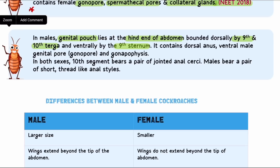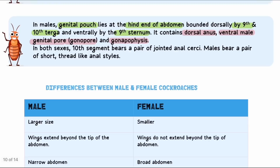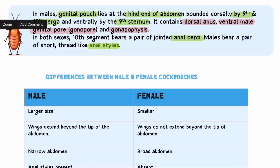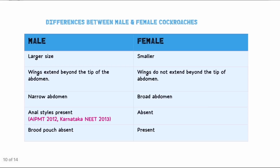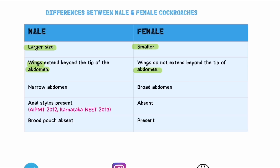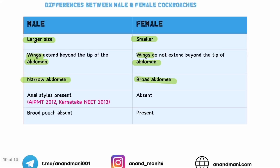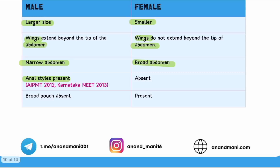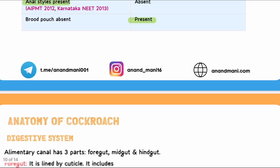In males, there is a genital pouch (not brood pouch) at the hind end of the abdomen, present on the 9th and 10th terga and 9th sternum. The male genital pouch contains: dorsal anus, ventral male gonopore, and gonapophysis (male external genitalia). Both males and females have anal cerci, but anal styles are present only in males — this distinction has been frequently examined. Differences between male and female: males are larger with wings extending beyond the abdomen; female wings reach only up to the abdomen. Male abdomen is narrow; female abdomen is broad. Anal styles only in males; brood pouch only in females.